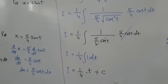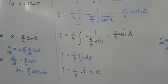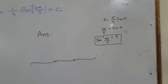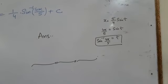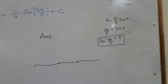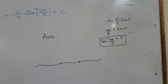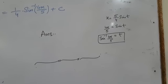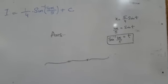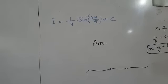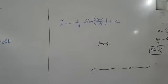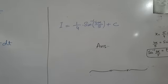So i = (1/4)·t + c. Now, since we put x = (5/4)·sin(t), we back-substitute: sin(t) = 4x/5, so t = sin⁻¹(4x/5). Therefore the final integral value is (1/4)·sin⁻¹(4x/5) + c. I hope you understand. Thank you.